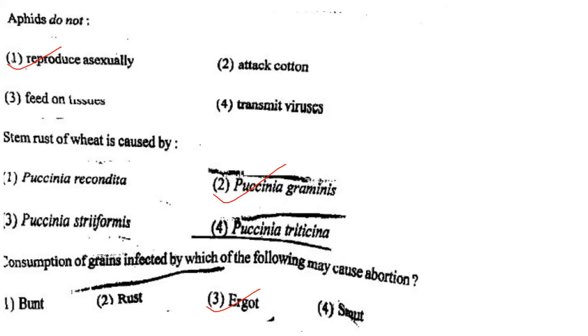Next one: Aphids do not — option 1, reproduce asexually; option 2, attack cotton; option 3, feed on tissues; option 4, transmit viruses. Answer is option 1: reproduce asexually.